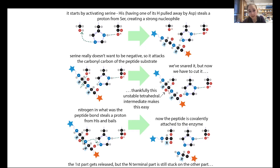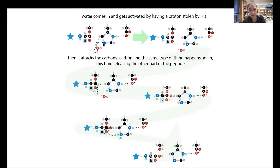The nitrogen from what was the peptide bond is going to steal a proton from histidine and then bail. So you have this first half released, but the other part is still covalently attached to the enzyme. In order for it to be an enzyme, it needs to be reset at the end. To do that, water comes in and is activated by histidine — just like it activated the serine before. Now you have another nucleophile. It attacks the carbonyl carbon, you get an unstable intermediate that gets resolved, giving you release of the product, and everything is reset.